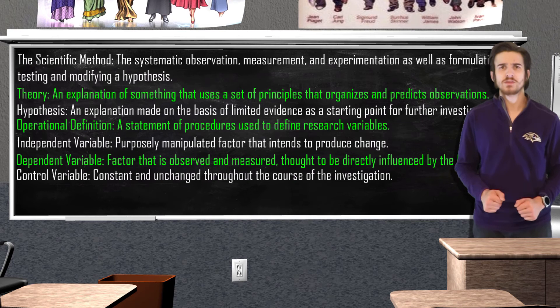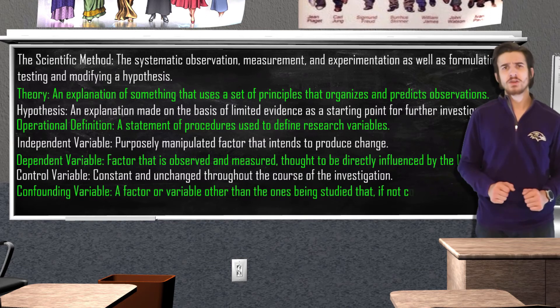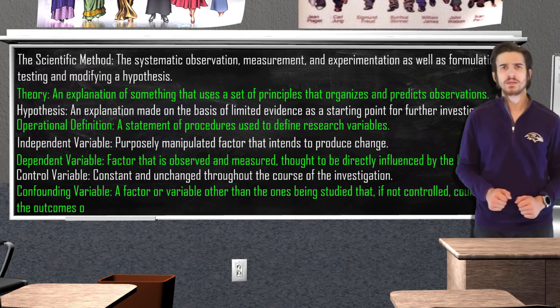When conducting an experiment, it's also important for psychologists to account for confounding variables. A confounding variable are other variables other than the ones being studied that, if not controlled, could affect the outcome of the experiment.